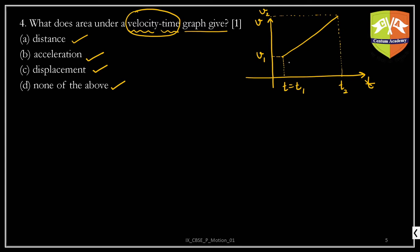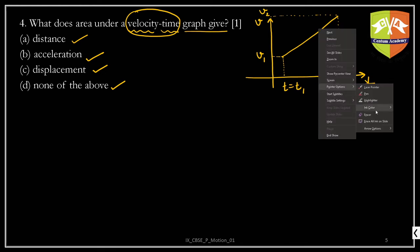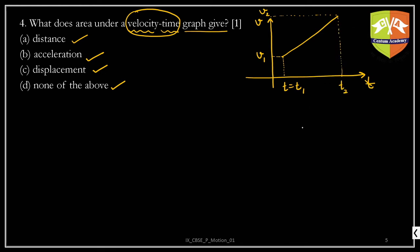First, understand what is area under the curve. The area under the curve is the area bounded between the given graph, the time axis, and the two perpendicular lines corresponding to two time values. Between these two time values, this shaded region is what we call the area. We need to understand what exactly this means.